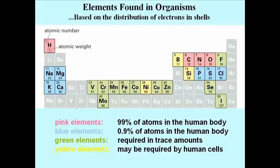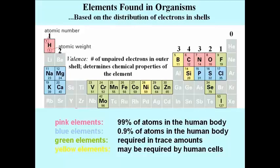The number of unpaired electrons in an atom's outer shell, or its valence, determines the chemical reactivity of the element. The valences of the elements used by cells range from 1 to 4. At the far right, you can see the noble gases, which have no unpaired electrons and so have a valence of 0.